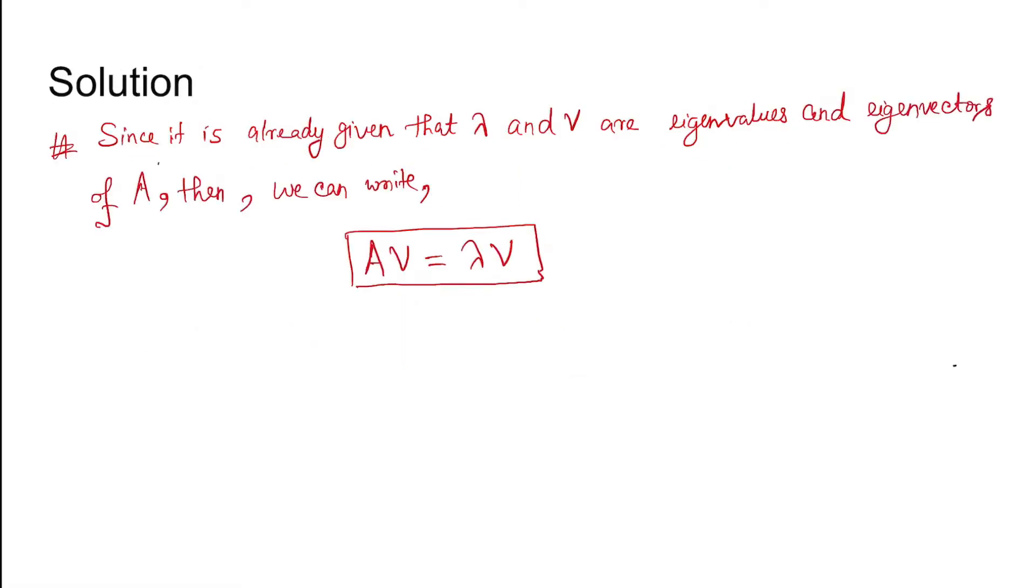Now, coming to the solution. Since it is already given that for matrix A, lambda is its eigenvalue and V is the eigenvector, we can write A into V equals lambda into V, where V is the eigenvector and lambda is the eigenvalue of matrix A.